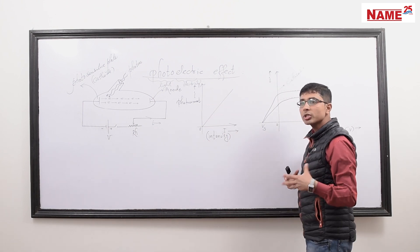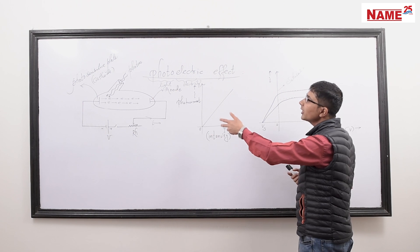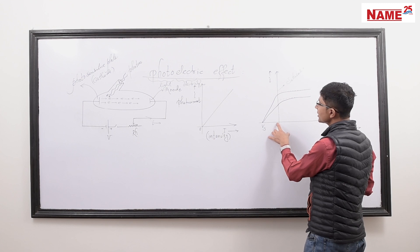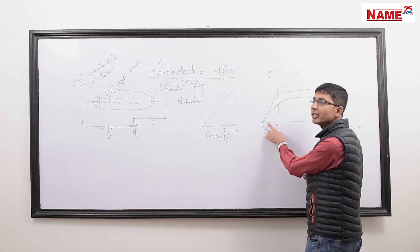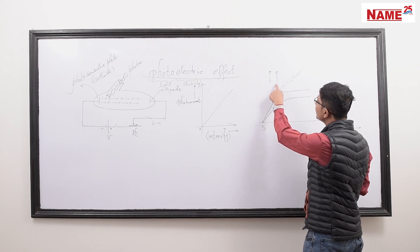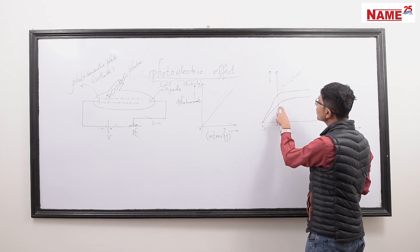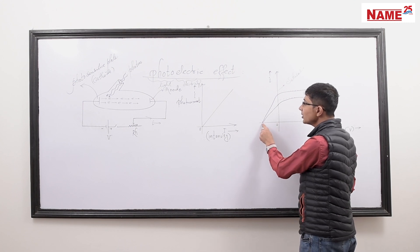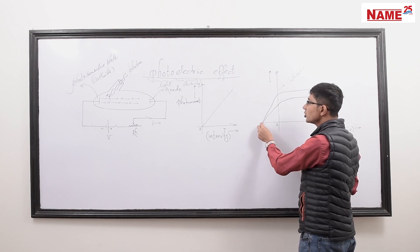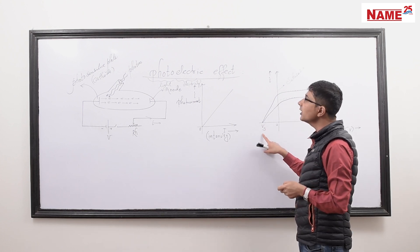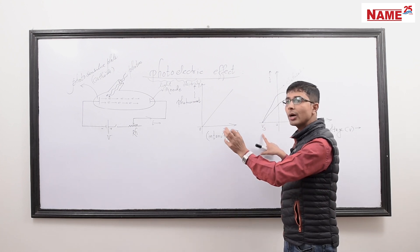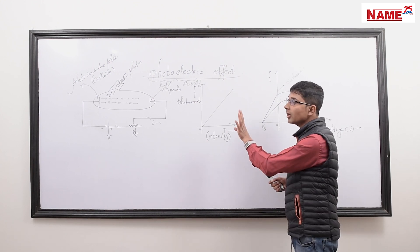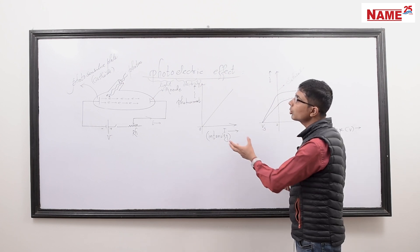As we increase the negative potential, the repulsion on the electrons increases. The current decreases as more electrons are repelled back. Eventually the current reaches zero. This negative potential applied at the anode that stops all the photoelectrons and reduces the photocurrent to zero is called the stopping potential.